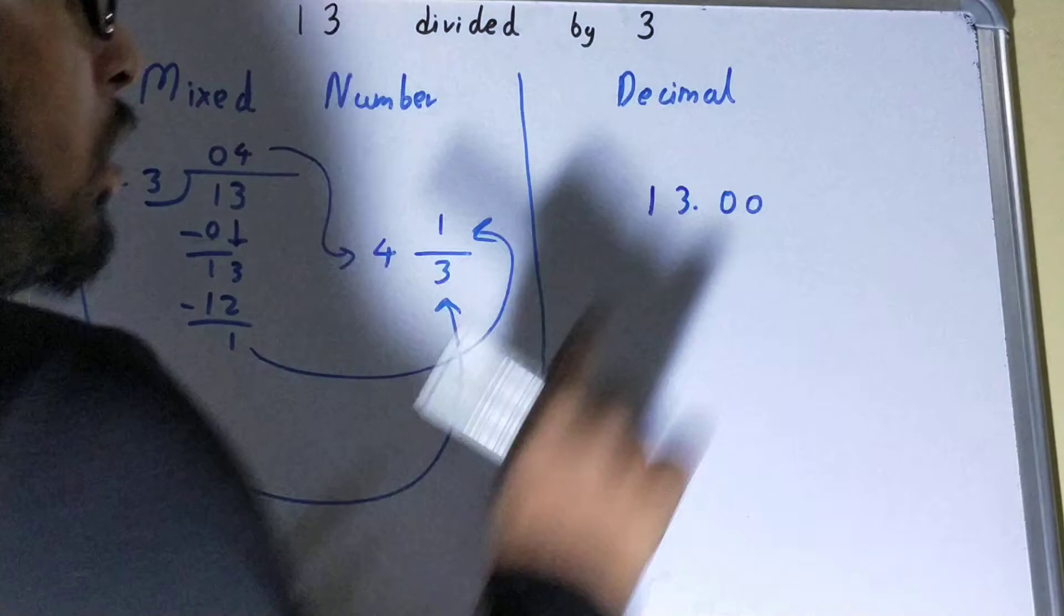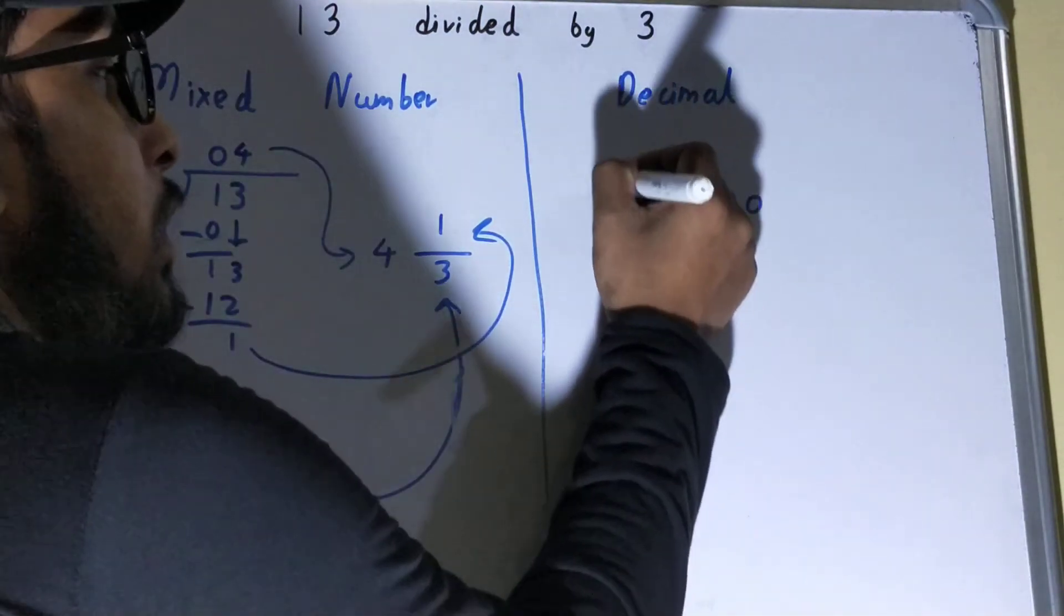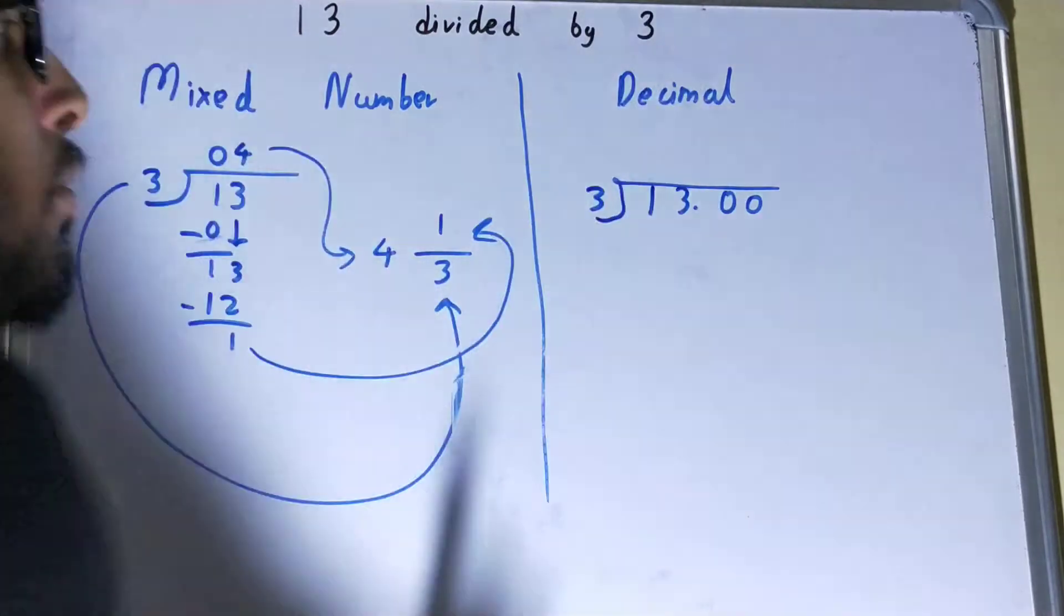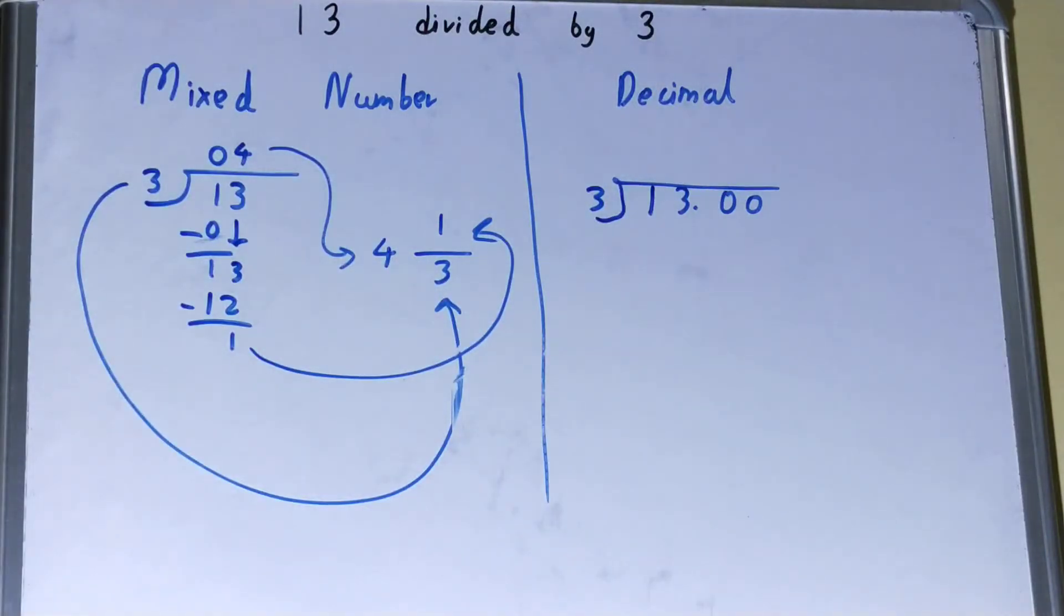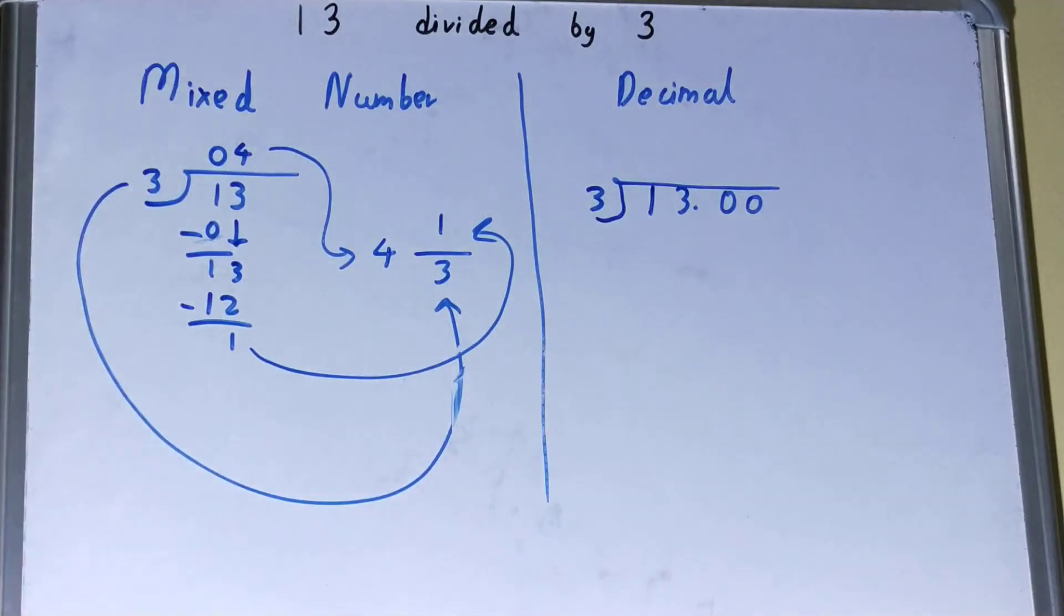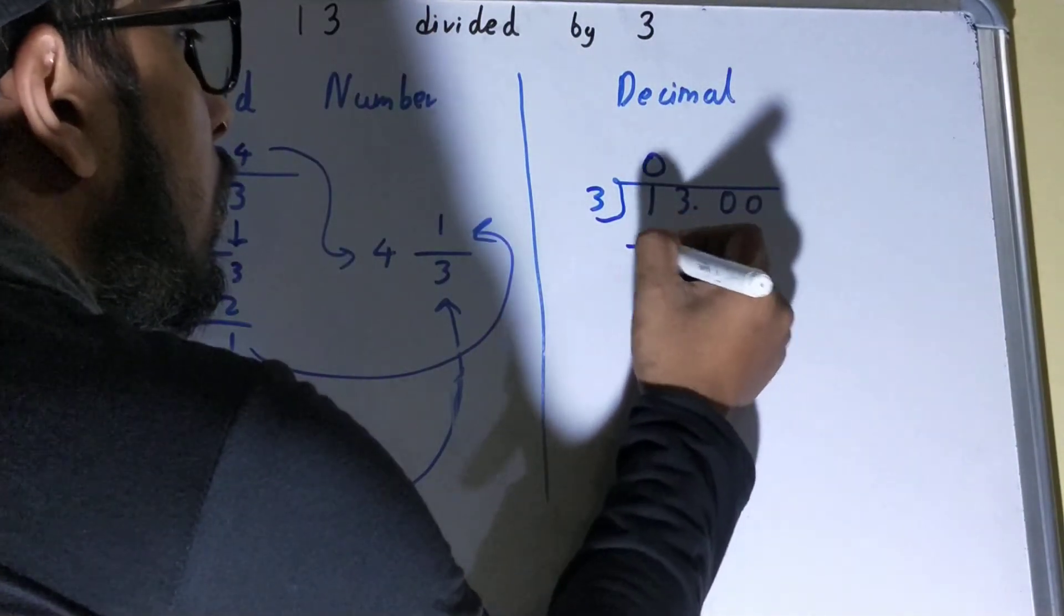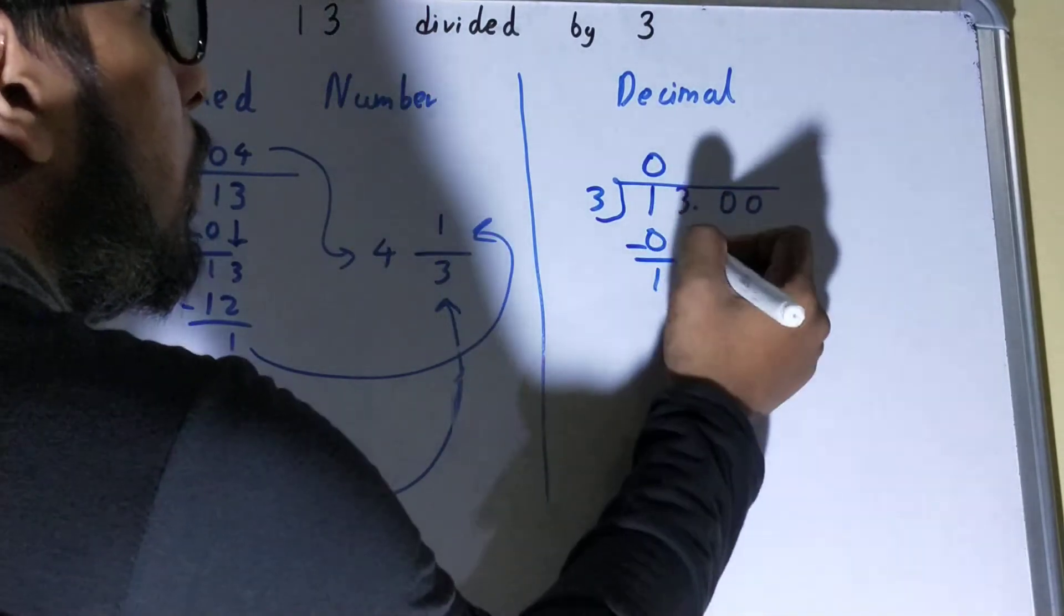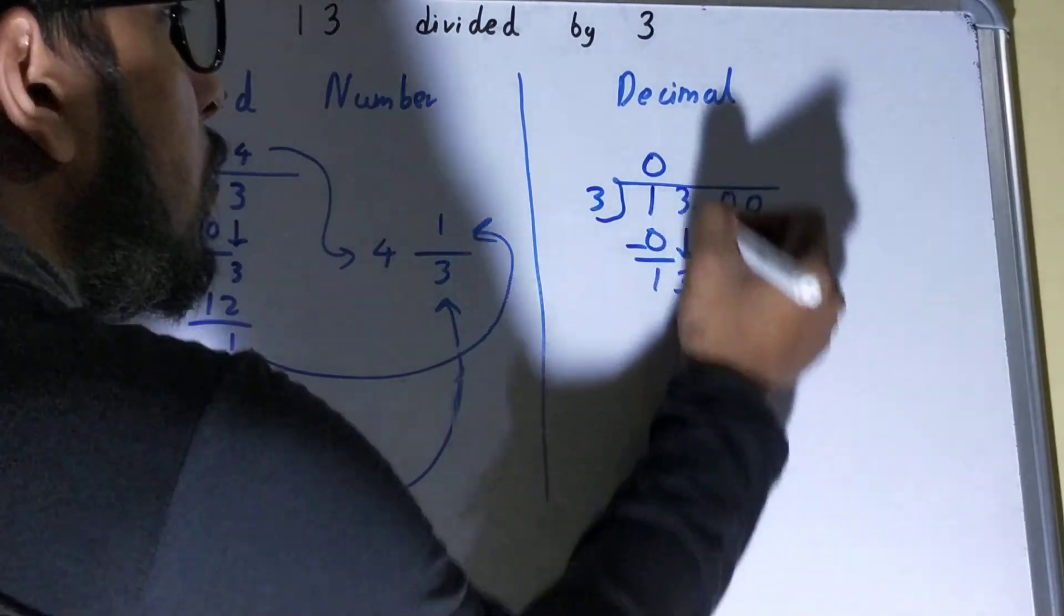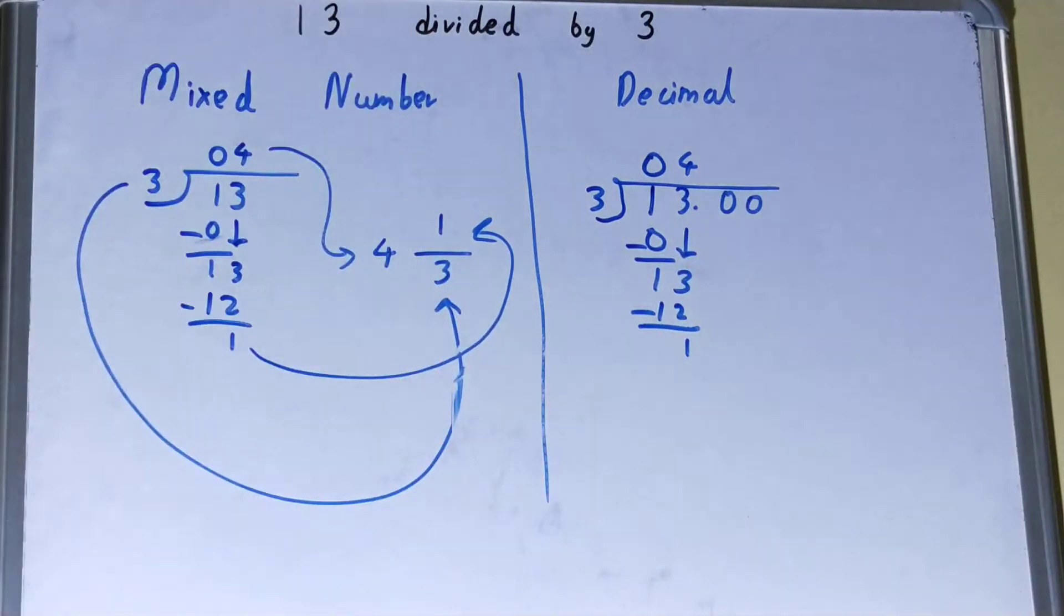You need to put two zeros, and then do the same long division. The process will be the same—digit-by-digit division. Three zeros is zero. I'll bring this three down. Three fours is twelve. I'm left with one.